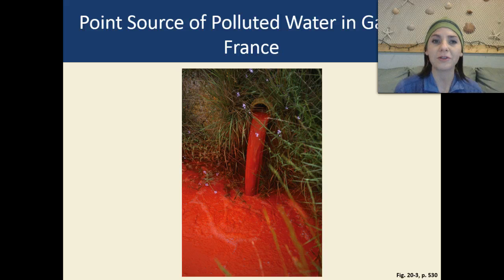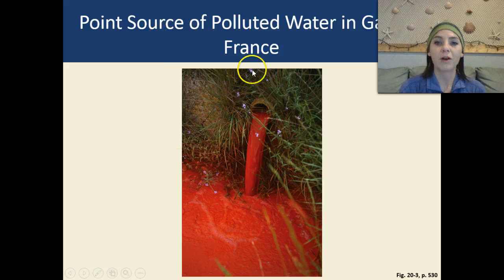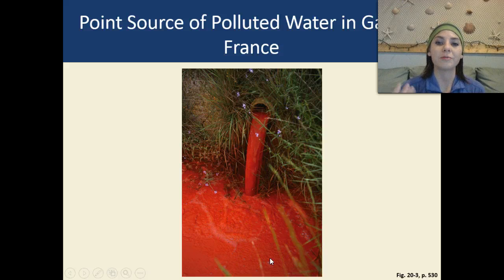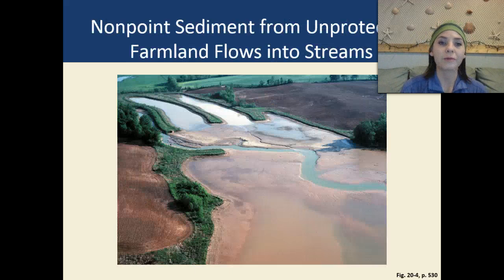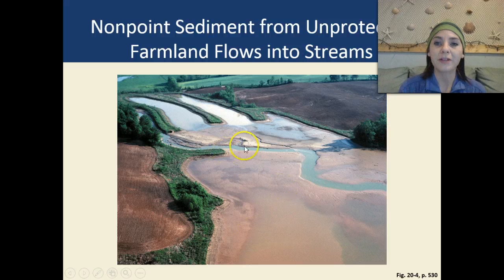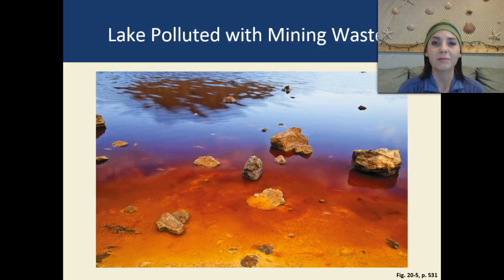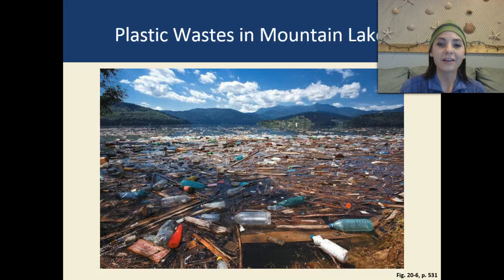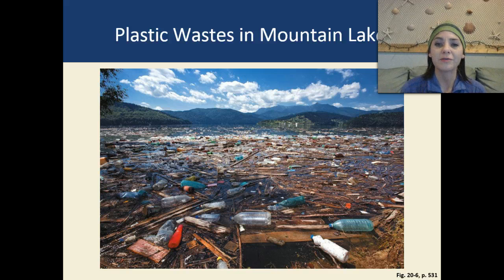The next pictures are from different types of polluted areas. This is a point source pollution from Gargis in France — it's obviously highly contaminated water, but it is a point source, meaning they know where it's coming from, they can measure it, and hopefully they can rectify and control it. This is an example of a non-point pollution source coming from sediment from unprotected farmland that flows into streams and rivers. This is a polluted lake contaminated with different types of mining wastes. And as you can see here, this lake has been extremely polluted by trash — tons of plastics and different types of debris have ended up here.